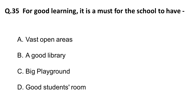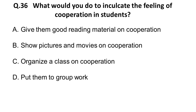Question 35: For good learning, it is a must for the school to have — A) vast open area, B) good library, C) big playground, D) good students' room. The correct answer is B: a good library. A good library is a must for school learning.